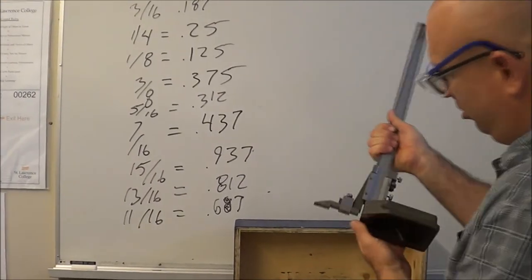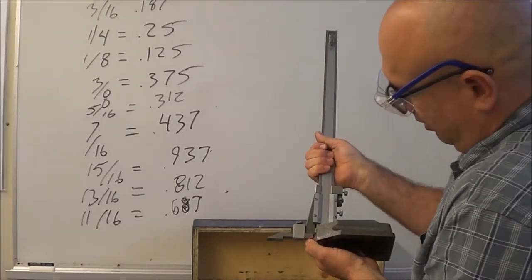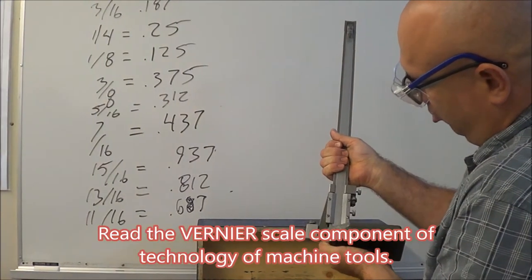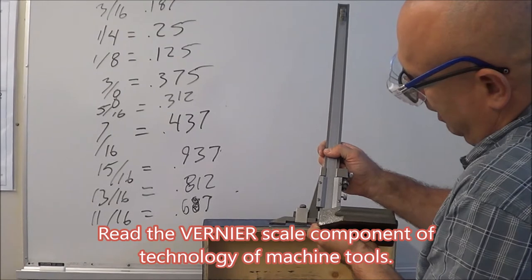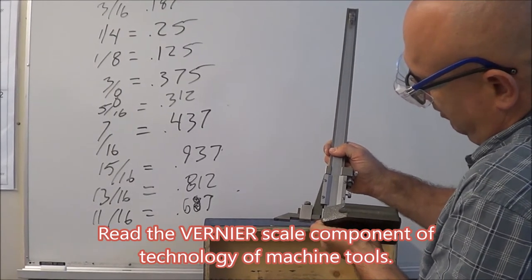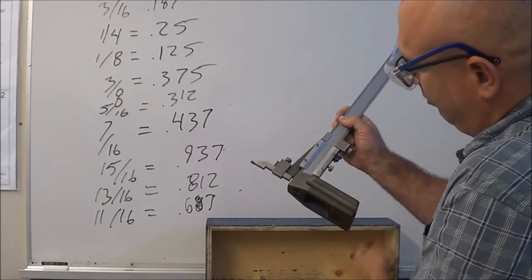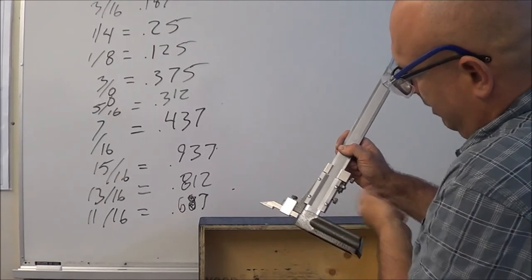I take my height gauge and I find 300 thousandths of an inch. Then I go up the sliding scale, 12 thou, and I line it up to a line beside it. Decimal 312. Lock it down a little bit.